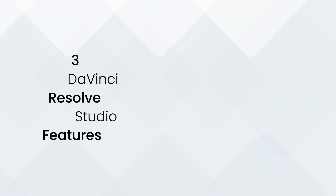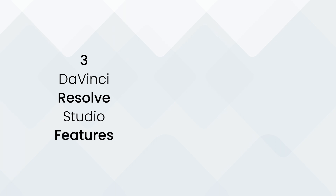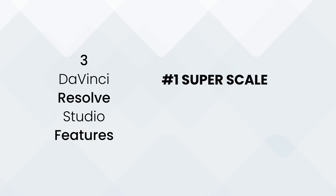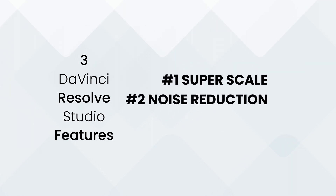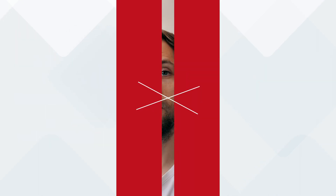Today we're taking a look at three paid features in DaVinci Resolve Studio: the Super Scale feature, the noise reduction feature, and the de-flicker feature. These are three features I use a lot — especially the noise reduction and de-flicker — which have saved me and my projects quite a few times when I couldn't go back and shoot the same clip again. They made it possible to finish the project and deliver a high quality product in the end.